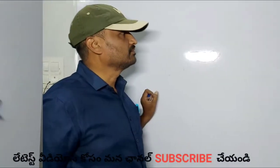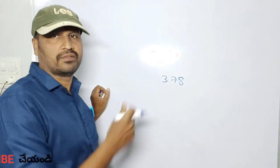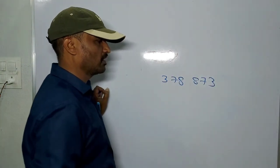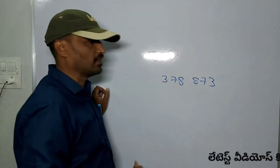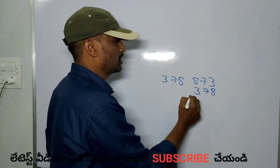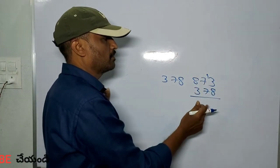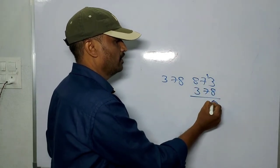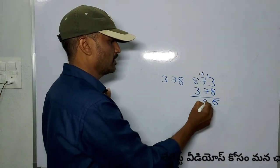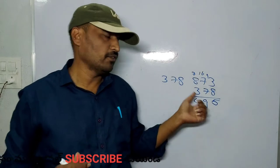Here is another example using 378. We reverse the number to get 873 and subtract 378. Working through the subtraction: 13 minus 8 is 5, 16 minus 7 is 9, and the answer is 495.